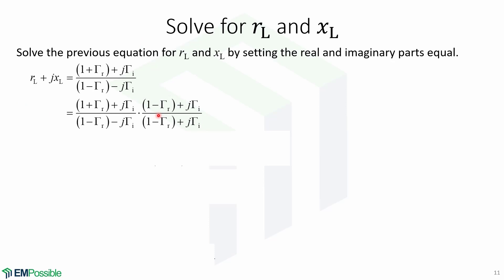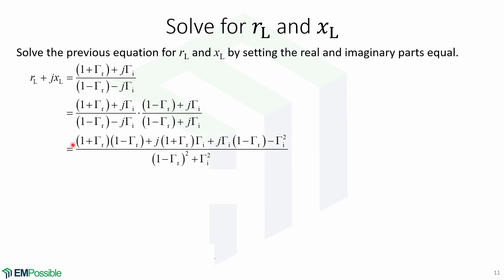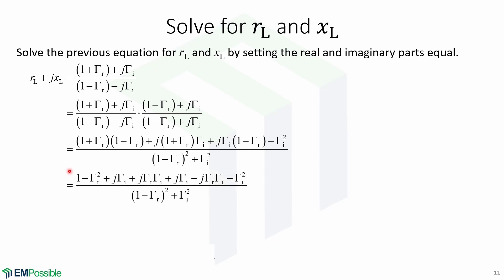We multiply by the conjugate. We carry out all the multiplication and factoring. We get rid of the parentheses by multiplying everything out.